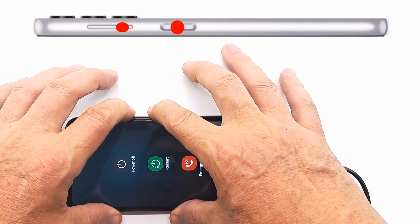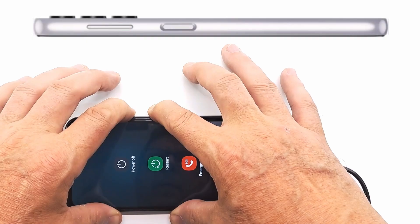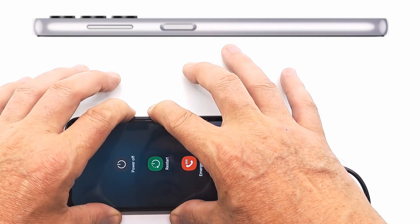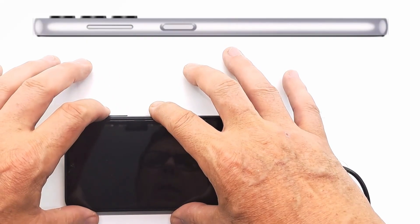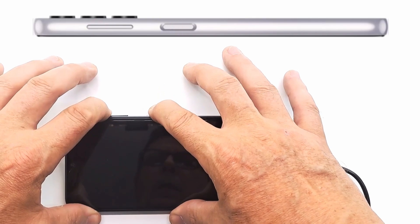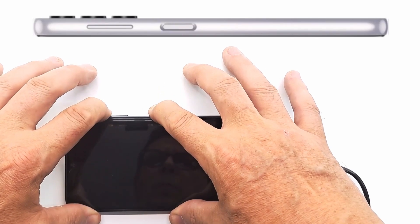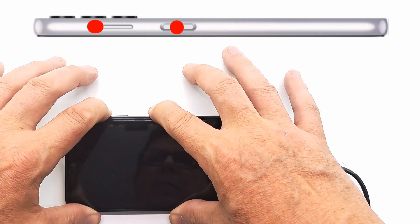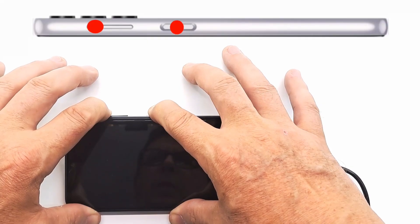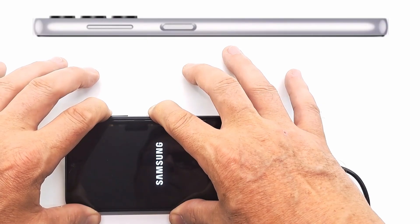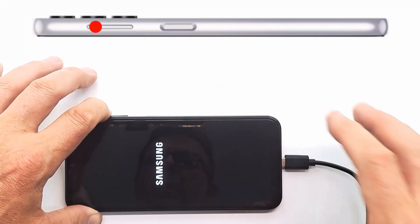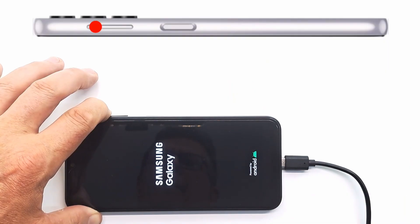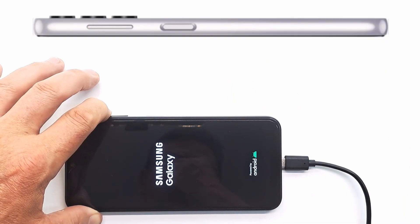We have to restart it by pressing the power and volume down buttons simultaneously. When the phone restarts, press the power button and volume up. When the Samsung logo appears on the screen, you can let go of the power button. Now the phone is in recovery mode.